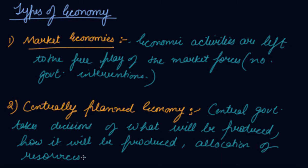All these are in the hands of the government. The central government takes the decisions in the economy. So that is the centrally planned economy. An example is China. And the third type is mixed economy.